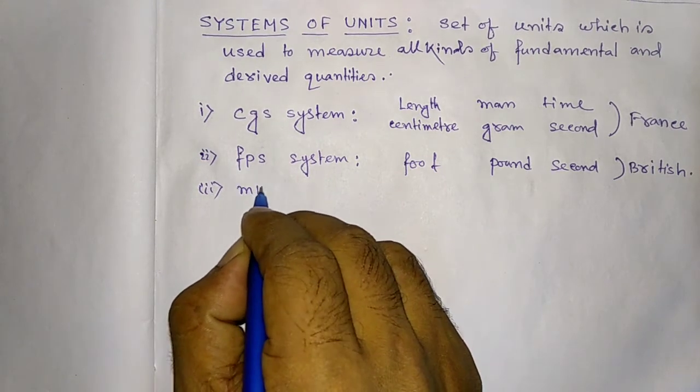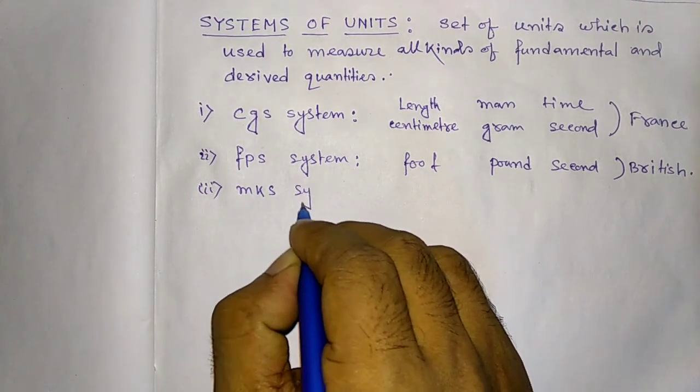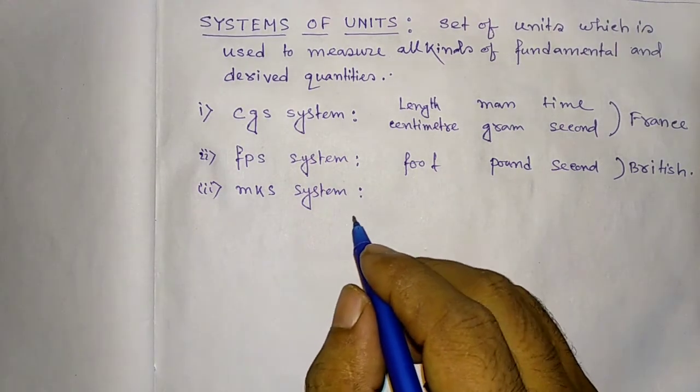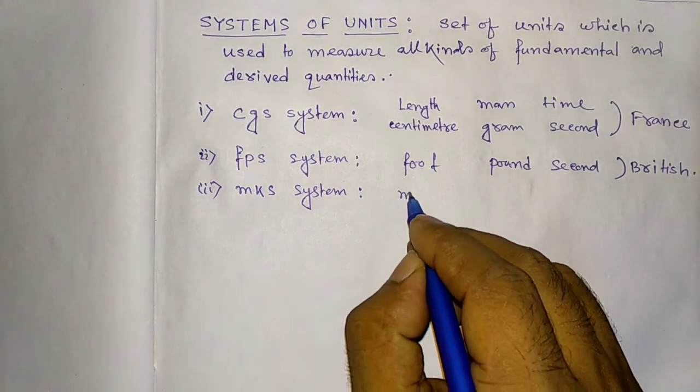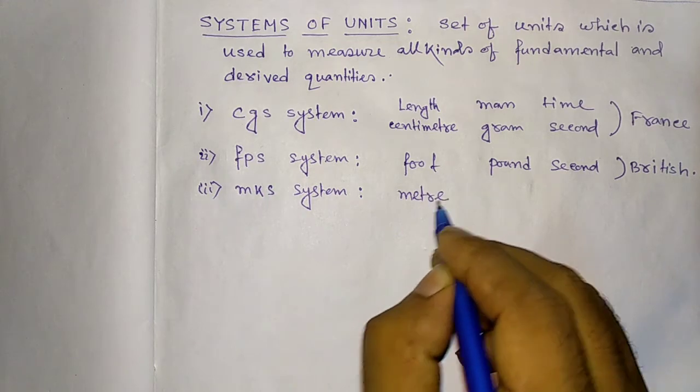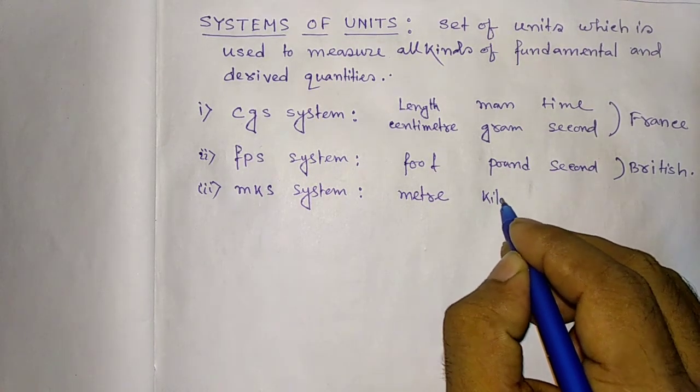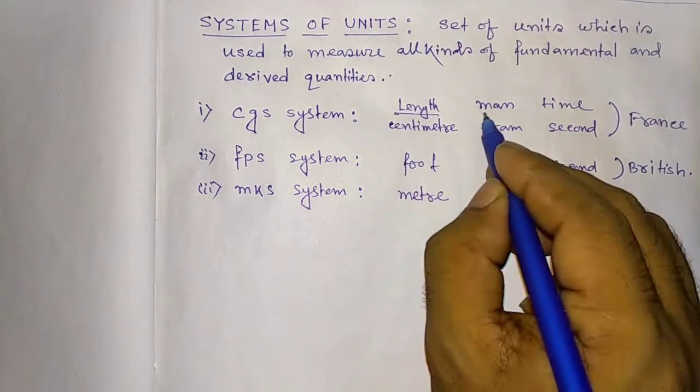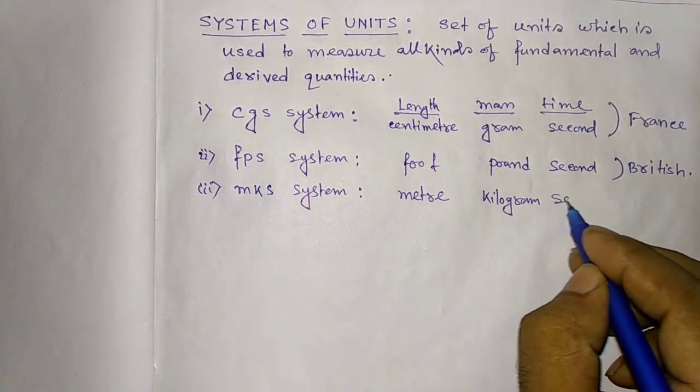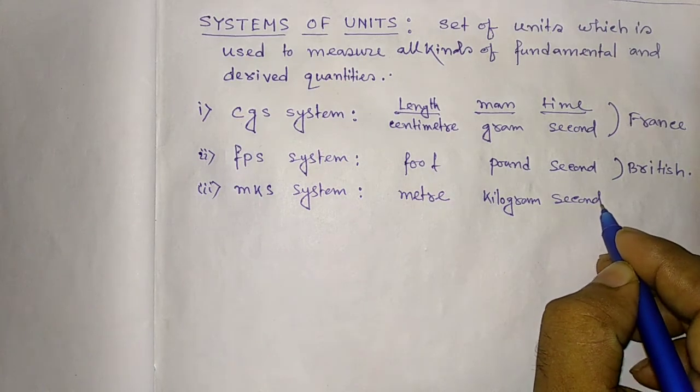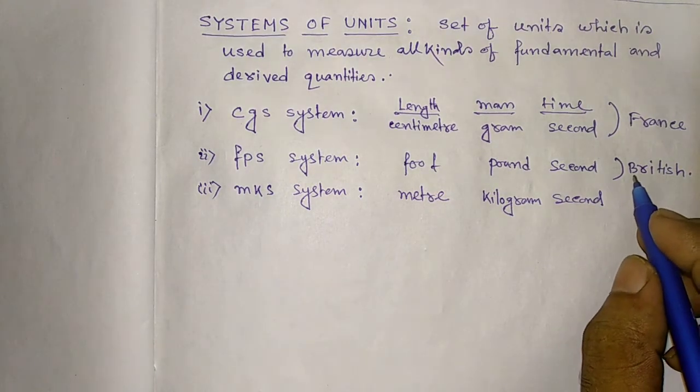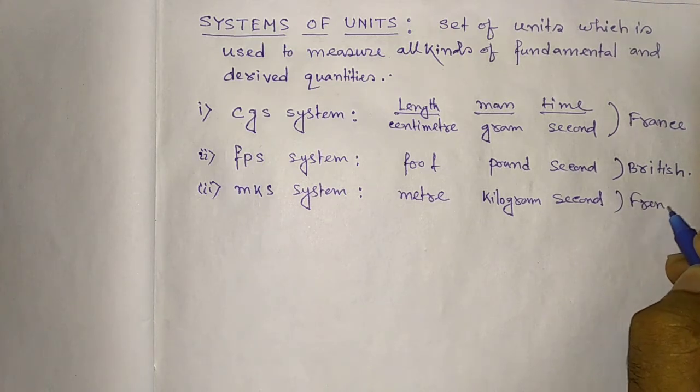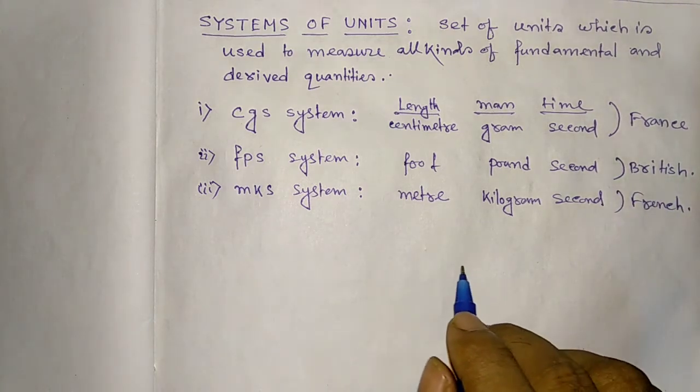Now, MKS system. In that system, unit of length is meter, mass is kilogram and time is second. So it is also French system of unit.